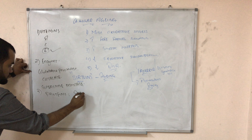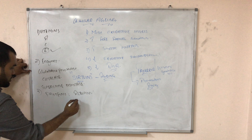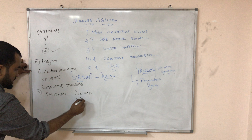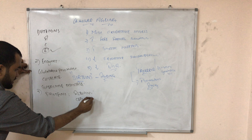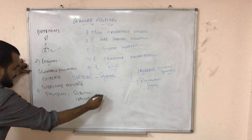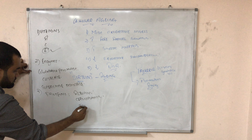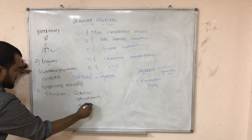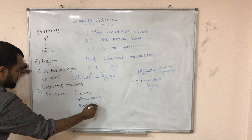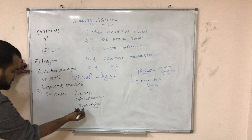The proteins in your blood plasma that act as antioxidants include albumin, ceruloplasmin which is the carrier of copper, and transferrin which transports iron.